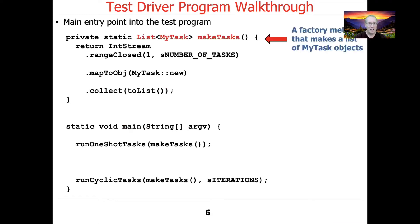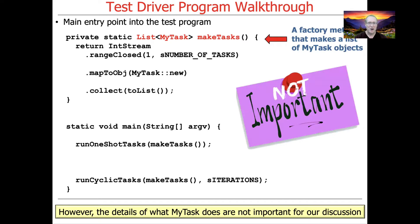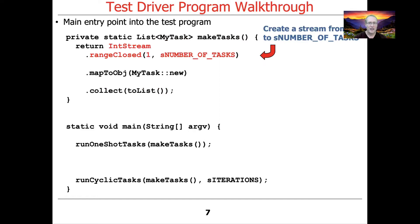We'll first take a look at the test driver program that runs all the various examples. This particular program has a factory method called MakeTasks that returns a list of MyTask objects. It doesn't really matter what MyTask does — you're welcome to look at the program at the link from my GitHub account. The MakeTasks factory method uses the IntStream class to create a range of values from 1 to the number of tasks, which let's assume for sake of argument is 10.